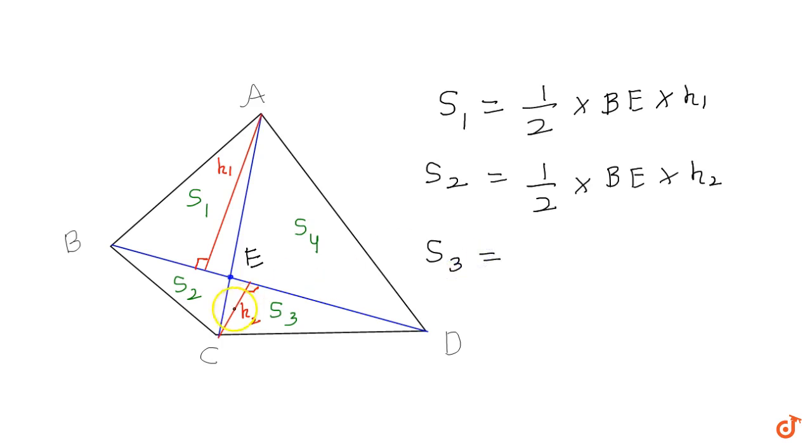For S4, the side will be DE but the height will be h1. So it will be one-half times DE times h1.